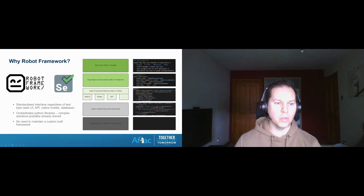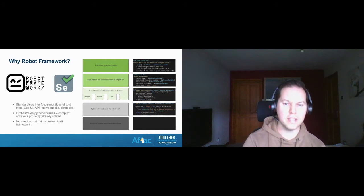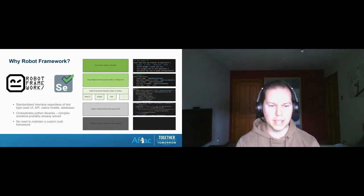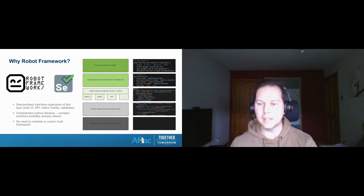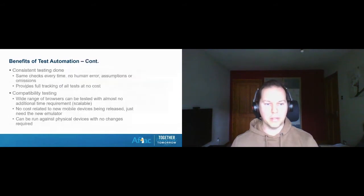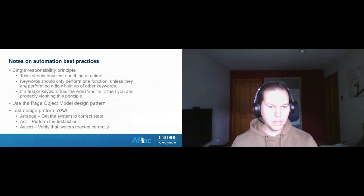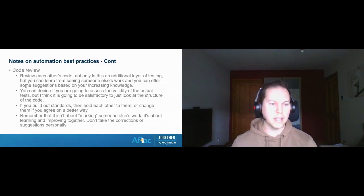Some companies create their own custom framework rather than using Robot Framework. That gives more control but means maintaining two sets of code — the framework itself and the test code. If a test breaks, you have to determine whether the framework is broken, the test is broken, or the system is broken. With Robot Framework, someone else handles that maintenance. I have quite a few slides on the benefits of test automation and best practices which you can pause and read in detail after watching the video back.